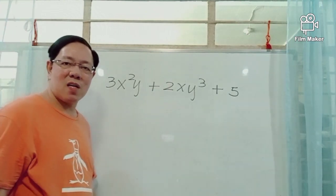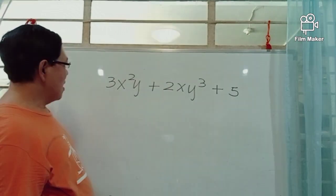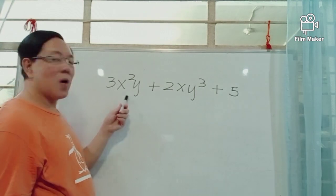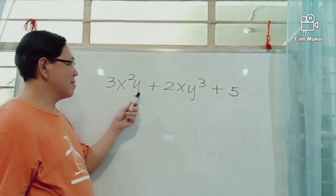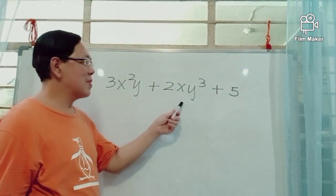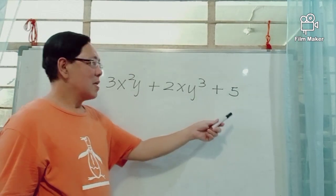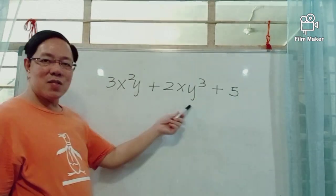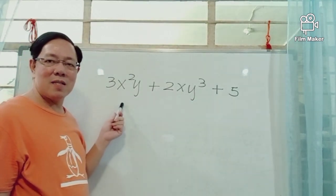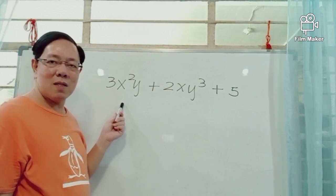This is an example of an algebraic expression. We have 3x squared y plus 2xy cubed plus 5. This algebraic expression has three terms, and it is called a trinomial.